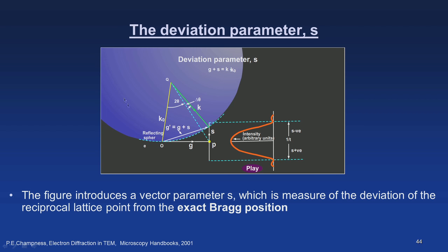The vector parameter S measures the deviation of the reciprocal lattice point from the exact Bragg position, giving quantitative data on how far diffraction takes place from the exact Bragg angle. This concept will be used and can be demonstrated in diffraction experiments. When I discuss Kikuchi lines, I will demonstrate peak positions showing positive S, negative S, and where S equals zero.